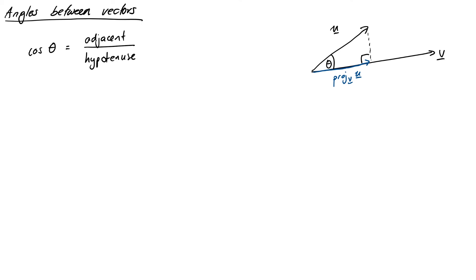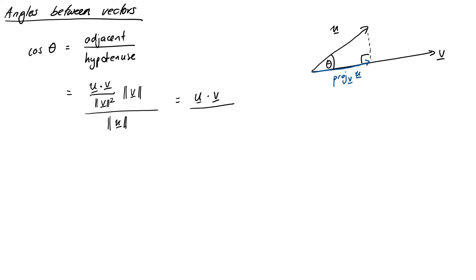We're going to do one thing slightly differently, because we want to allow our adjacent side to go negative if our angle is larger. So rather than just taking the length of the projection, we're going to take it but remove the absolute value of the dot product. The adjacent will be (u·v over v·v) times the length of the vector v, so any negative signs from our dot product are preserved. On the bottom, the length of the hypotenuse is just the length of vector u. So that simplifies to u·v divided by the length of u times the length of v.